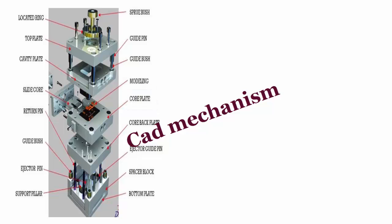Spacer block: mounted between the movable clamping plate, bottom plate, and the movable cavity plate to give space and allow the ejector plate to move when ejecting the part. The required length of the spacer block depends on the ejector stroke needed to eject the product.